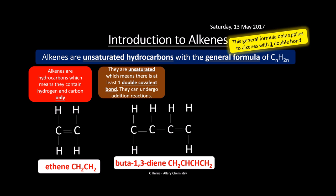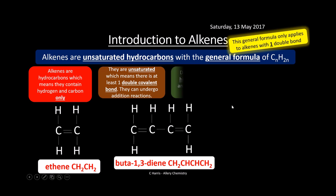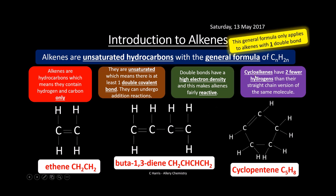Here are some examples. Ethene is CH2CH2, and buta-1,3-diene is CH2CHCH2 — so we've got two alkenes there. The double bonds have a really high electron density, making them fairly reactive, much more reactive than alkanes which don't have this double bond. You can also have cycloalkenes, which have two fewer hydrogens than their straight chain counterparts. Cyclopentene is an example: C5H8.